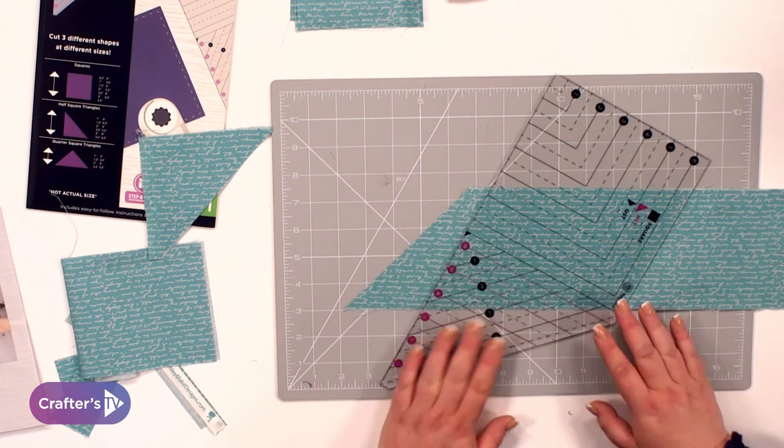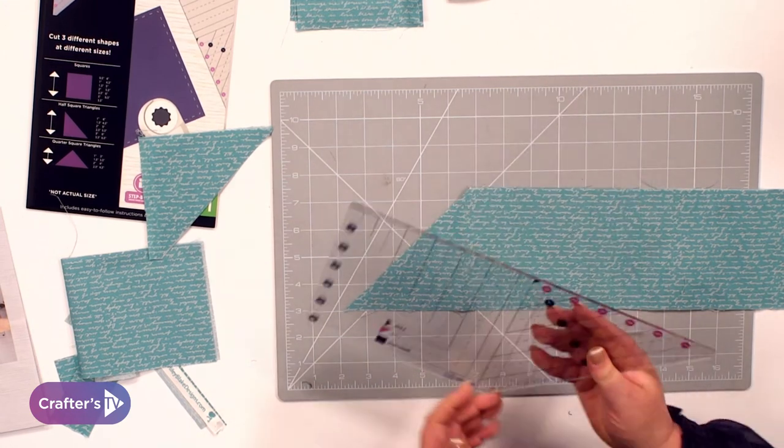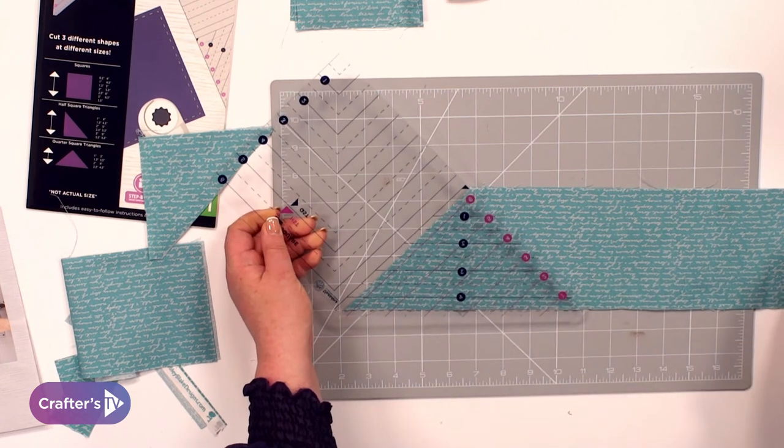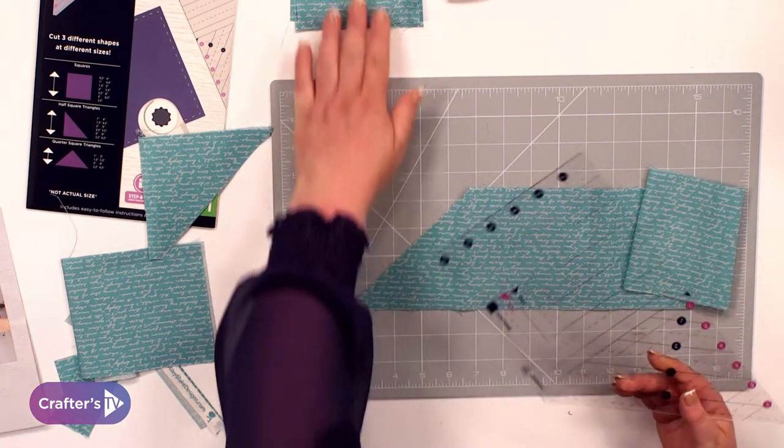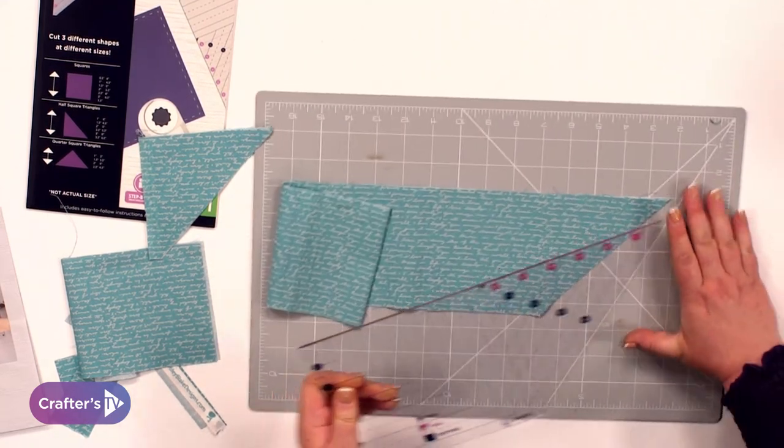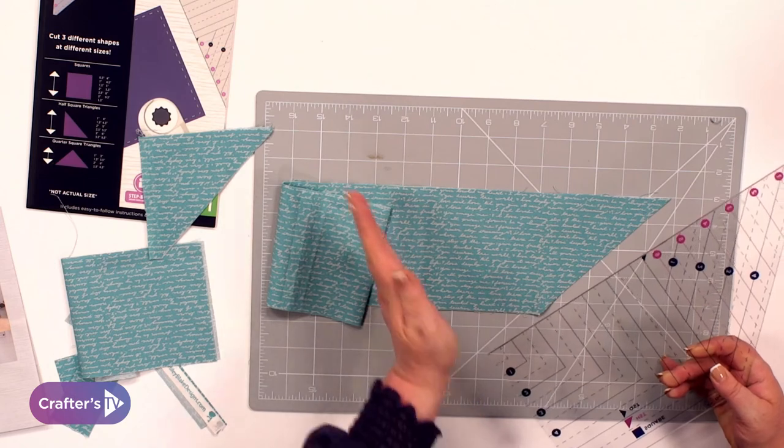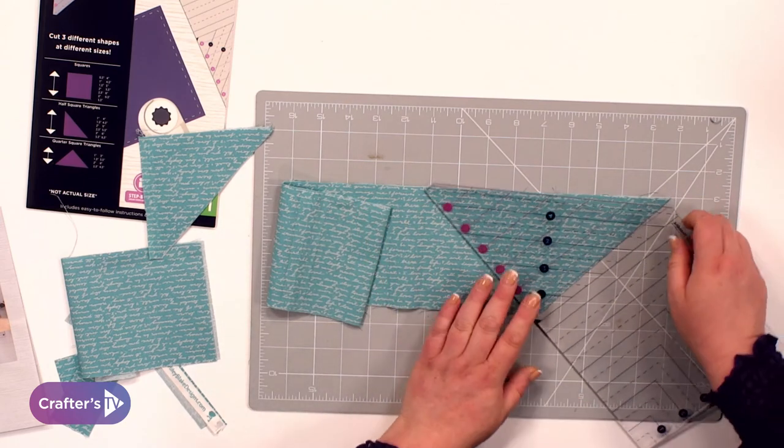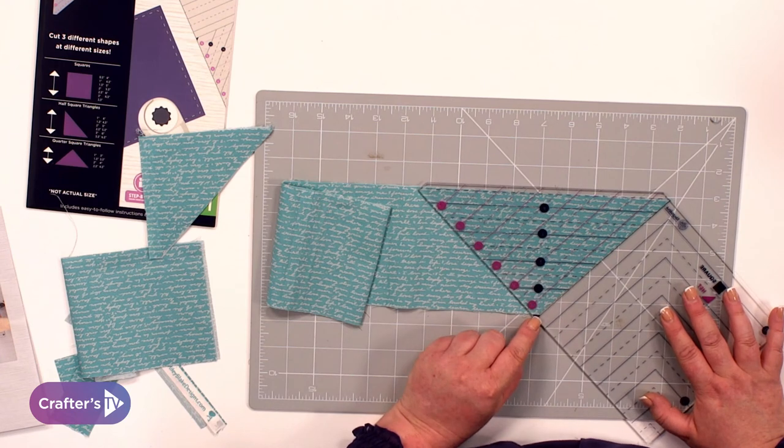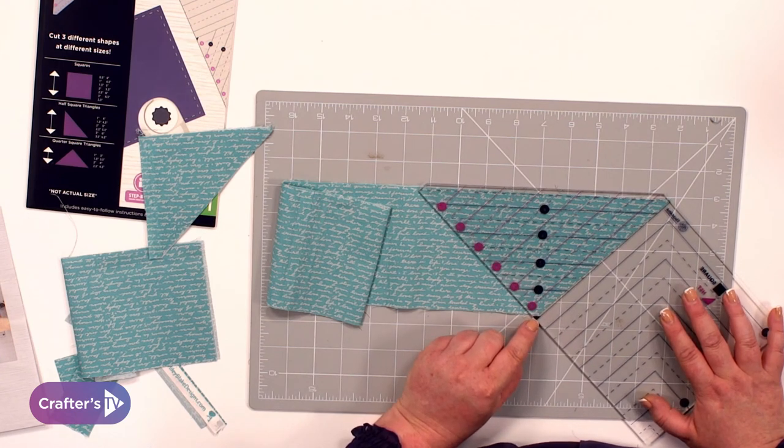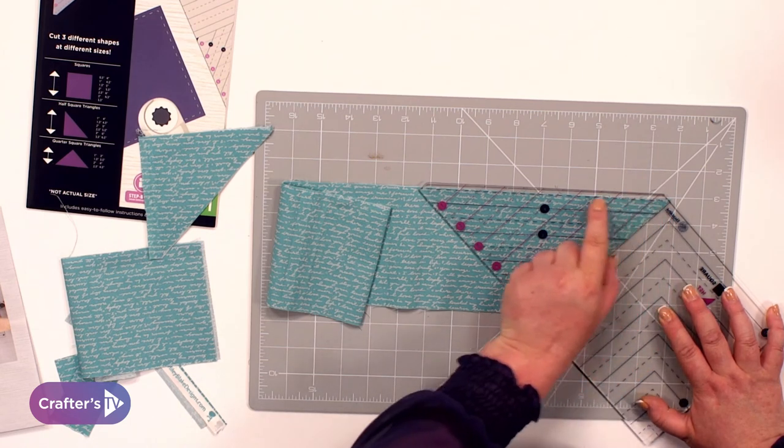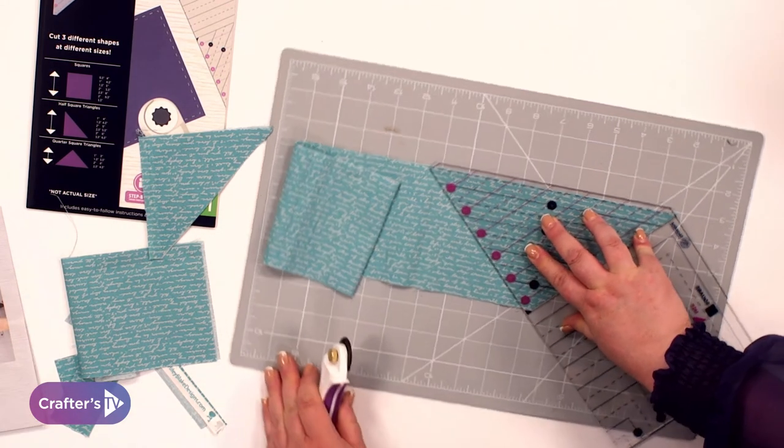And then you've got an option here. You can either flip the ruler over to cut up the other side or you can rotate your mat. I like to rotate my mat for this one because obviously I'm left-handed so I want to be cutting up this side. So I've turned that around and then I'm lining it back up again. So we've got that little triangle just hanging over the edge of the strip. I've got this lined up here. I've got the dash lined up here. And then again...